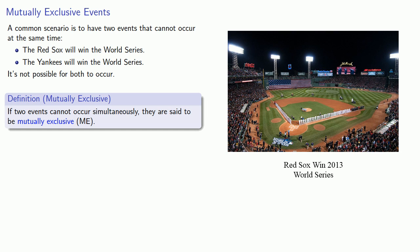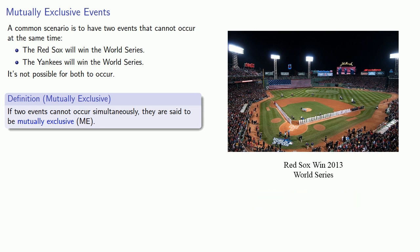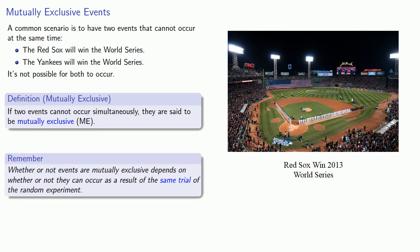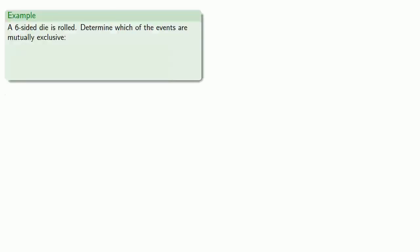You can't have the Red Sox and the Yankees winning the World Series at the same time. What's important to remember is whether or not events are mutually exclusive depends on whether or not they can occur as a result of the same trial of the random experiment. For example, suppose a six-sided die is rolled. Determine which of the events are mutually exclusive.